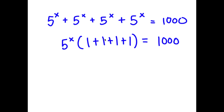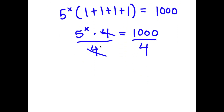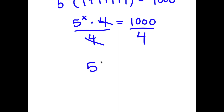If I simplify what's in the parentheses — 1 plus 1 plus 1 plus 1 — that's 4. So I have 5 to the power of x times 4 is equal to 1,000. Now I can divide both sides by 4. These two cancel out, and now I get 5 to the power of x is equal to 1,000 divided by 4, which is 250.